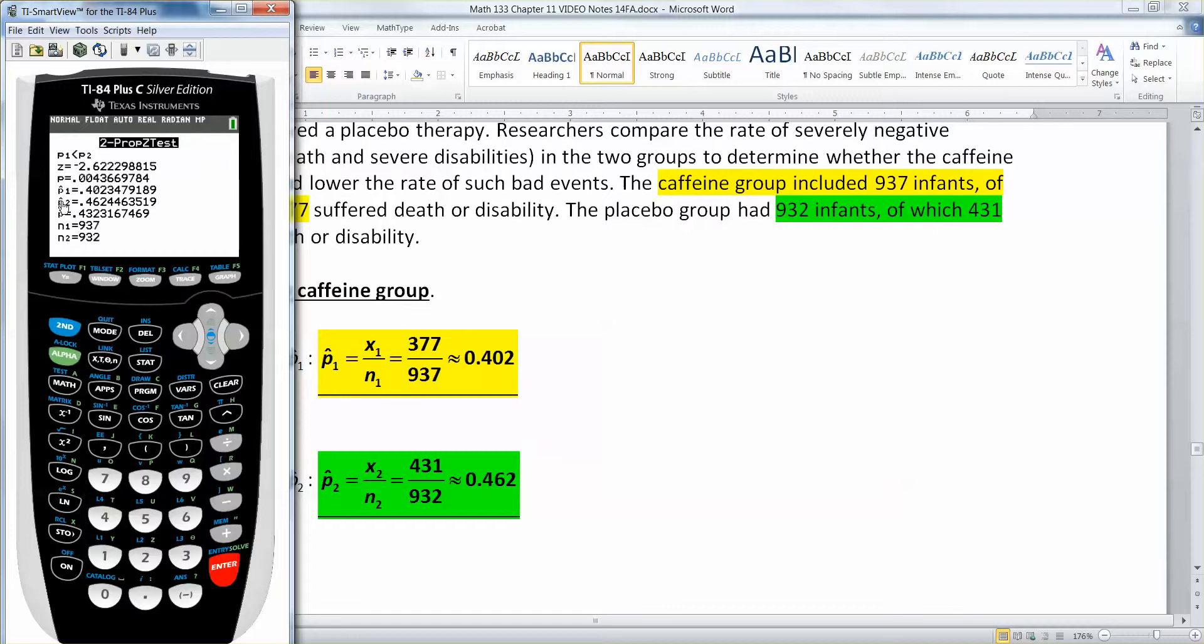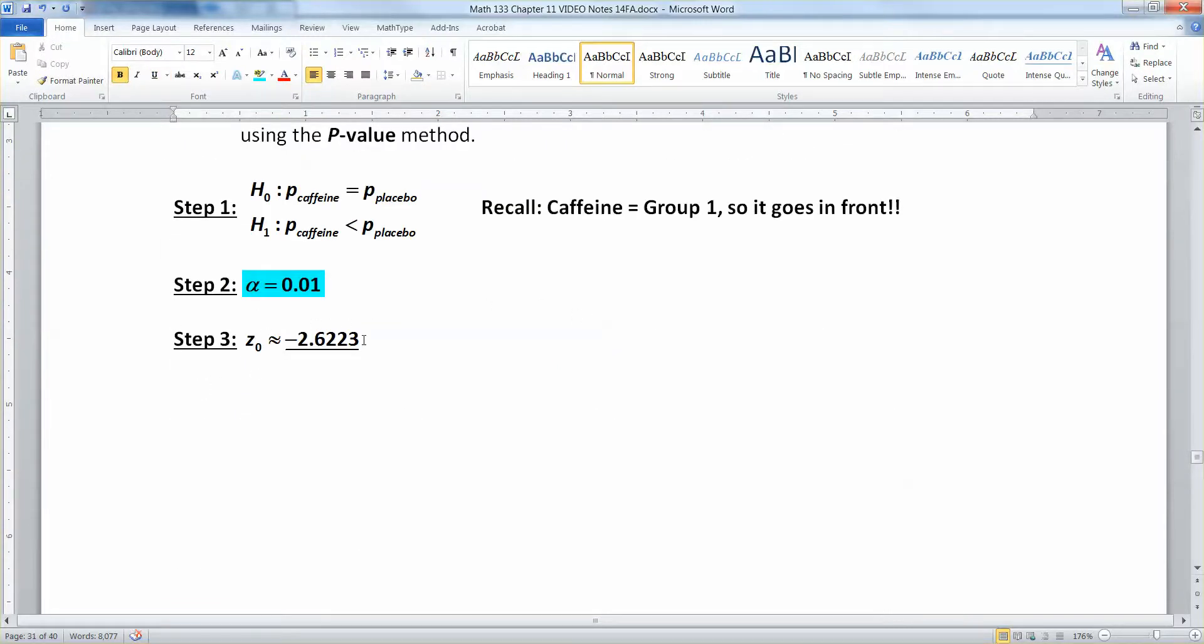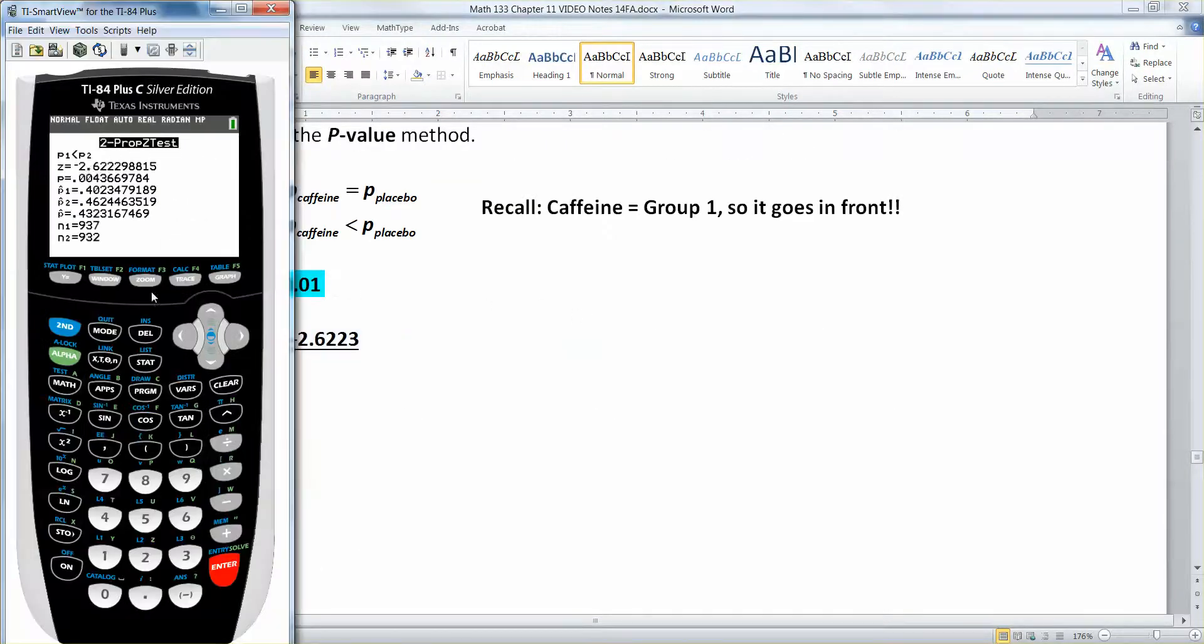It's not P1 hat or P2 hat. Those are sample proportions. It's not P1 and P2. Those are the population proportions assumed. It's P, plain P. That's your P value, which is important since we're doing the P value method. So that's where my test statistic comes from. It's the Z in there, negative 2.63223.